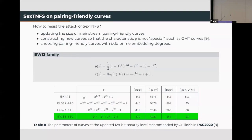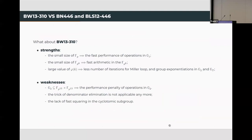In this table, we list the parameters of the three popular pairing-friendly curves and our target BW13 curves at the 128-bit security level. These parameter sizes are recommended by Guillevic in PKC 2020. Here, we summarize the strengths and weaknesses of the BW13 curve.